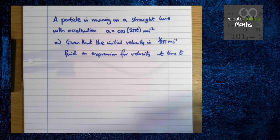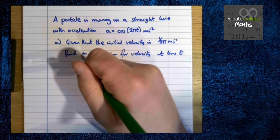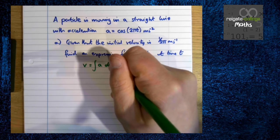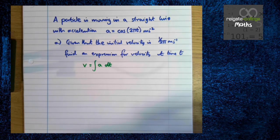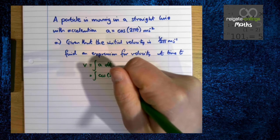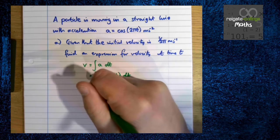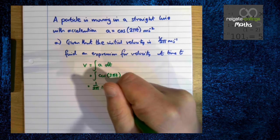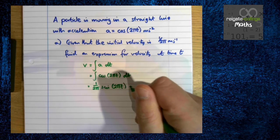So here's our first example. A particle is moving in a straight line with acceleration A equals cos of 2πt. Given that the initial velocity is 1 over 2π meters per second find an expression for velocity at time t. So first things first we know that we're trying to find velocity and we know velocity is the integral of acceleration. So that's our starting point and you must write that down. So we have the integral of cos of 2πt which is 1 over 2π sine 2πt plus c.